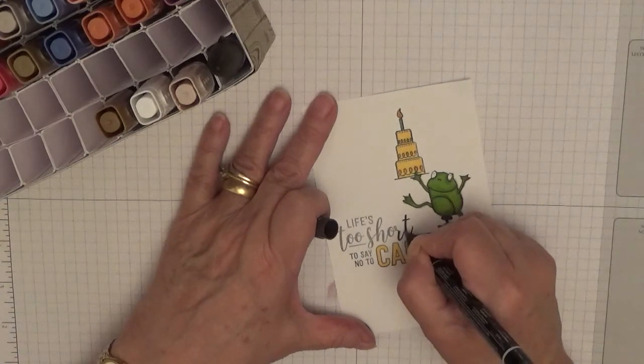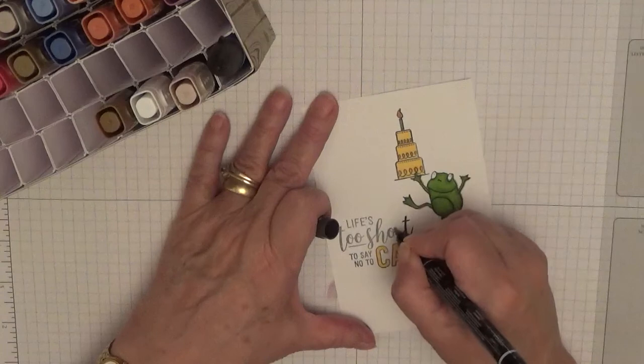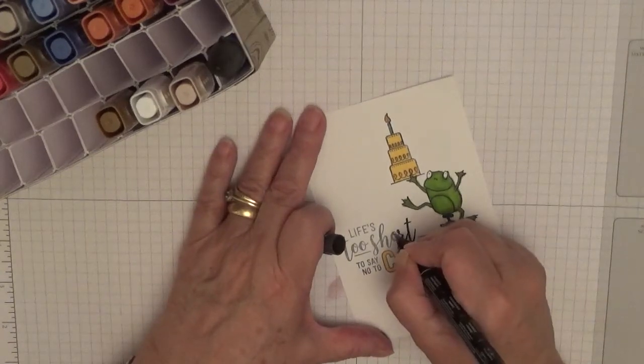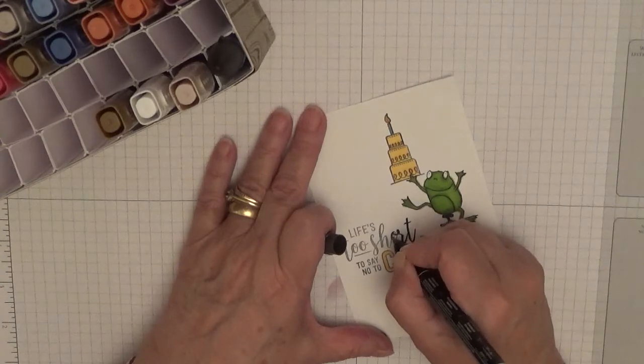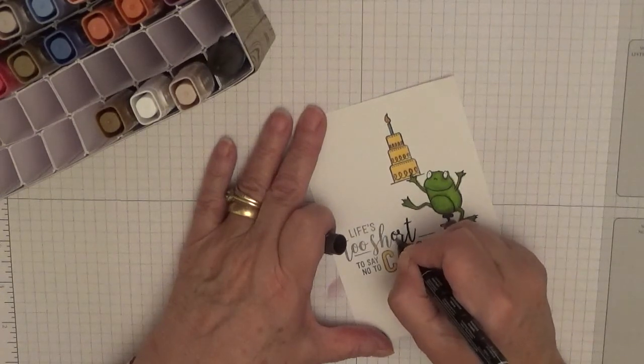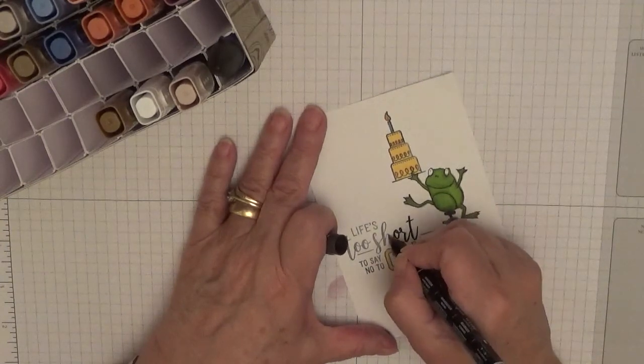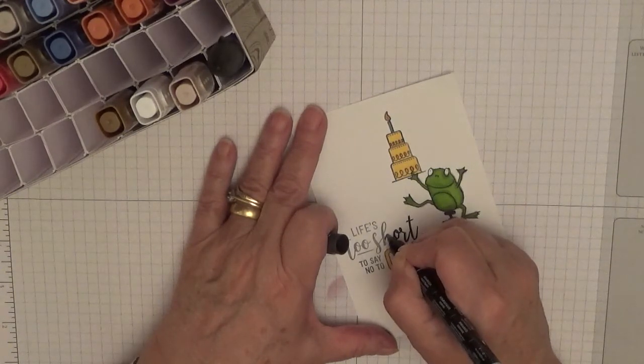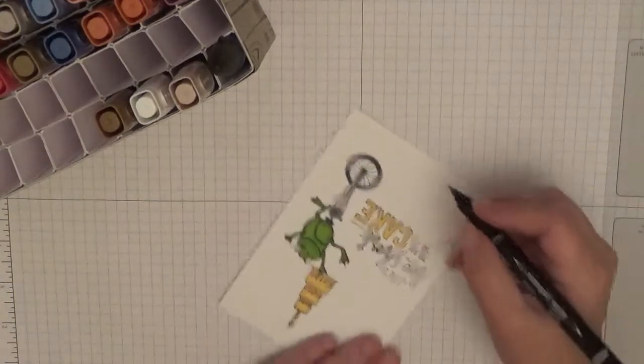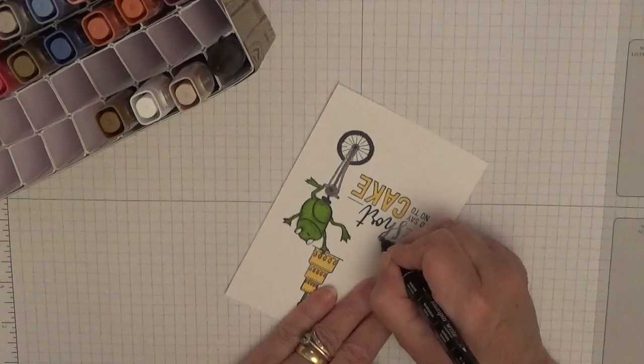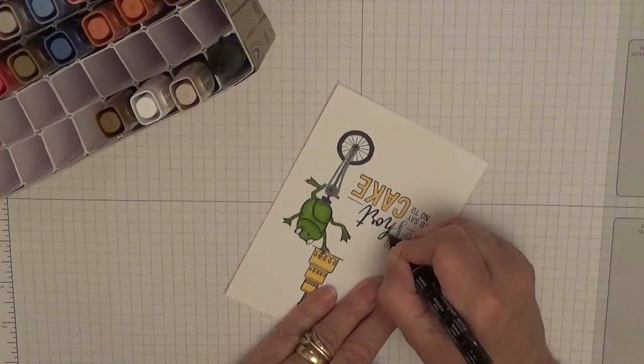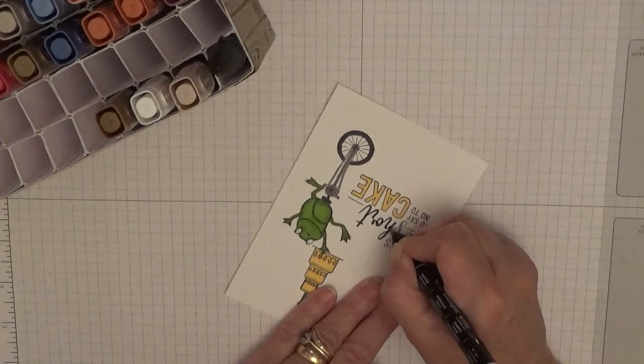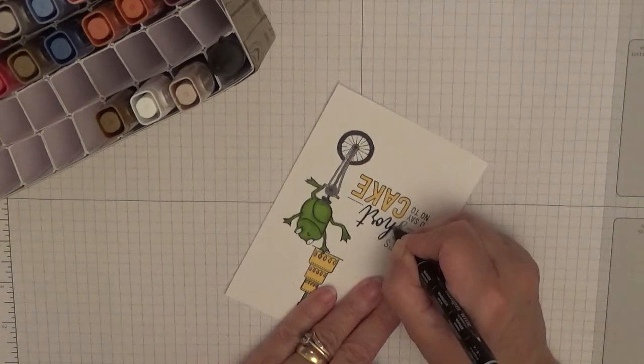You could make it darker by using your stamp positioner, or in Stampin' Up's case, Stamparatus, and keep stamping it until it's as dark as you want it.